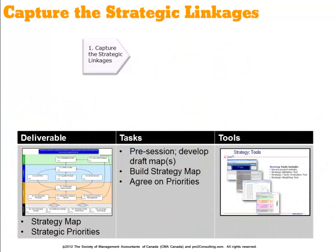The first step, capturing the strategic linkages, is going to help you build the strategy map with their priorities. There'll be some pre-work you'll need to do in order to develop your existing strategy documents and bring those to the table. Ultimately, you'll work with a leadership team to help build out the strategy map and those priorities.